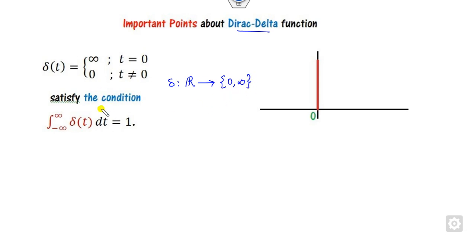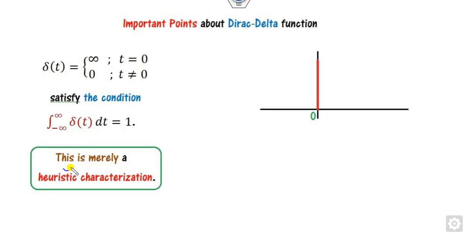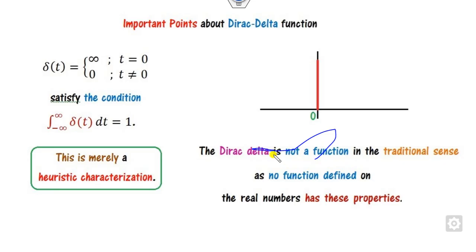Can you find any function whose area is 1? That is, can the integration equal 1? It can never be, because if you break it from minus infinity to 0 and then 0 to infinity, it can never be 1. So this means this is a heuristic function. The Dirac delta is not a function in the traditional sense, because there is no function defined on the real numbers that satisfies these properties.